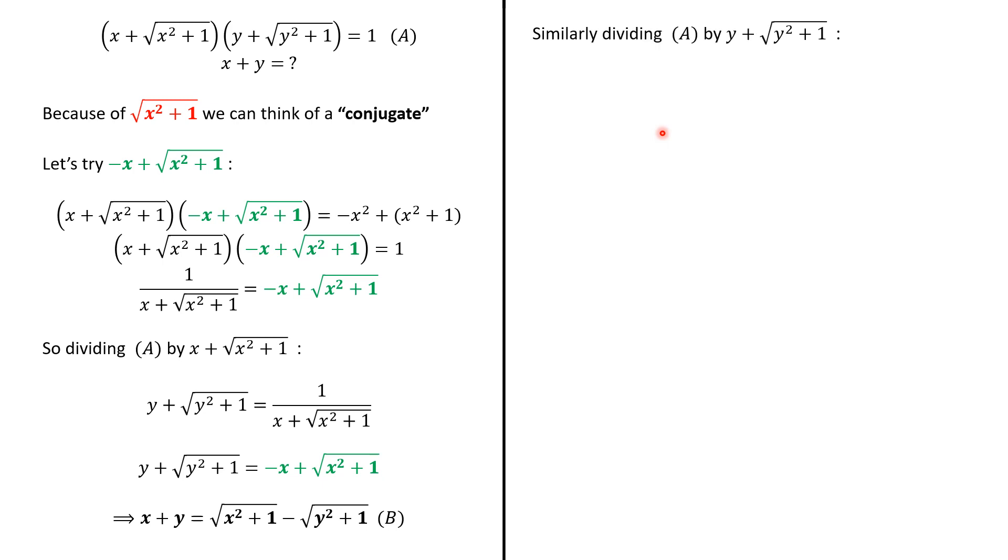Now, we know that in this problem, x and y are playing symmetric roles. So, if we switch the roles and divide rather by y + √(y² + 1), we're going to have that x + y equals the square root with switched roles of x and y minus that other square root.